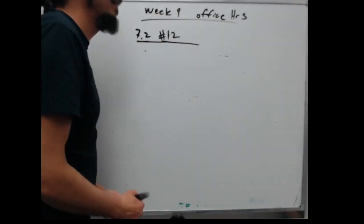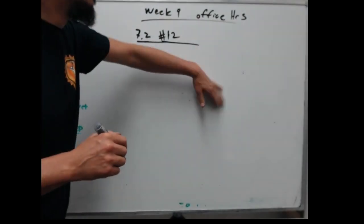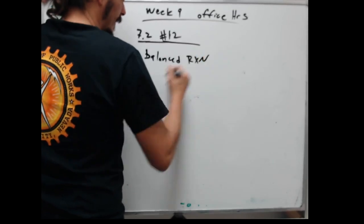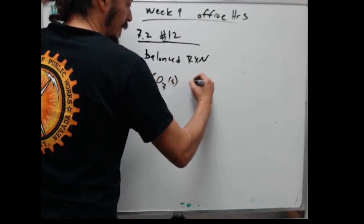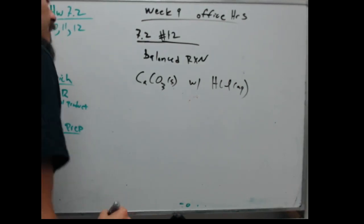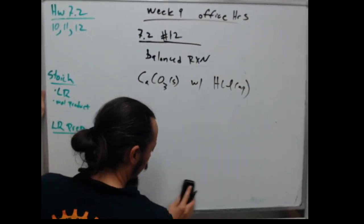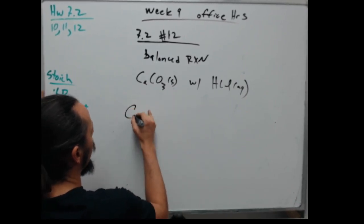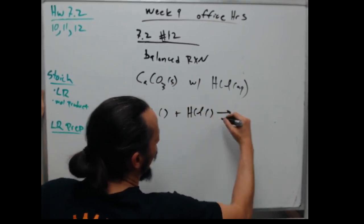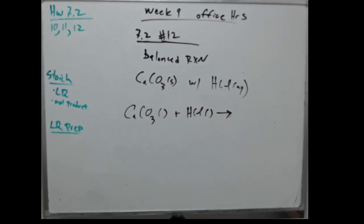Problem 12: write a balanced reaction for solid calcium carbonate with a solution of hydrochloric acid. CaCO3 plus HCl. We need to predict products. This is an acid-base reaction, but it's also a double displacement — a flip-flop. So I take my positive thing and move it where the other positive is, and vice versa. That gives me H2CO3 and CaCl2. But first I need to make sure products are charge-balanced: calcium is +2, hydrogen is +1, carbonate is −2, chloride is −1.